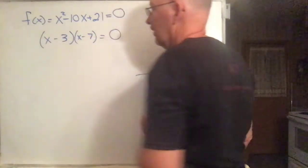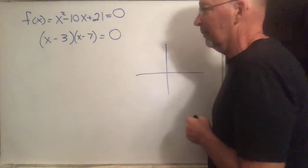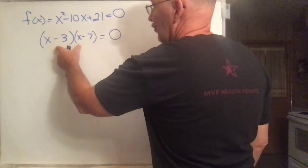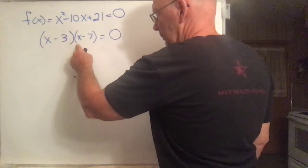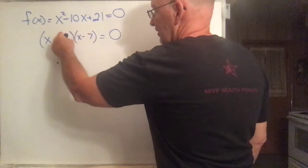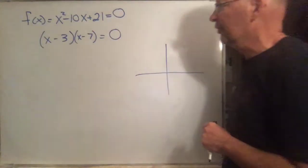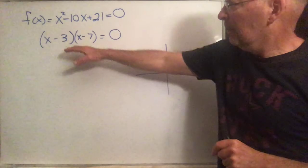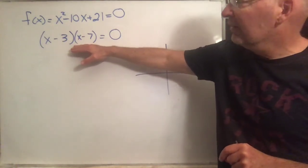Negative 3 and negative 7 work, right? They add to negative 10 and they multiply to 21. If you use FOIL on this, you're going to get x-squared minus 3x minus 7x, which is minus 10x, plus 21.